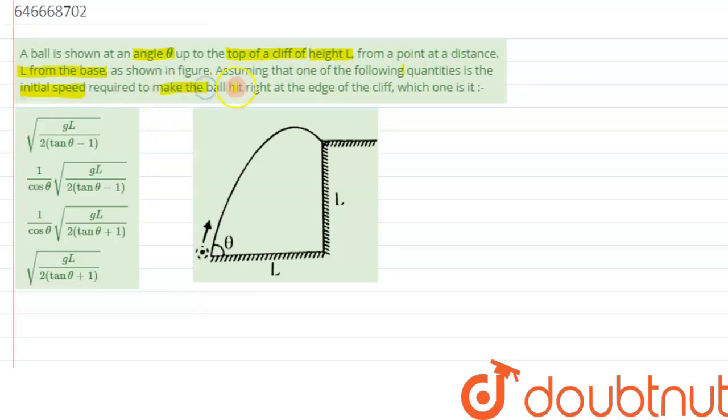Required to make the ball hit right at the edge of the cliff, which one is it? So basically we have been asked to calculate the value of initial speed. What must be the initial speed so that this ball will reach the top of the cliff? So let's try to understand this question. We have been given the initial velocity, let's suppose it has to be u.